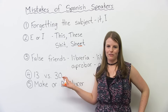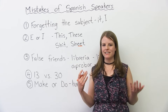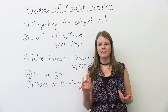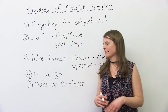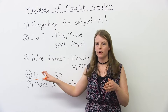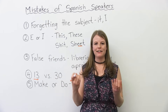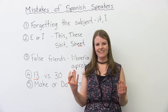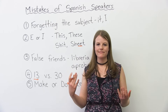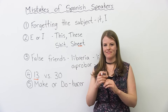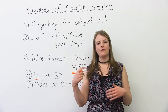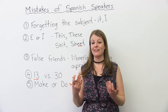Number four is a pronunciation problem with numbers. You might hear 13 and 30, 14 and 40, 15 and 50 — they sound very similar, and people might write down the wrong number. To say 13 correctly, the first part 'thir' is quiet, and 'teen' should be loud and long: 'thir-TEEN'. Whereas for 30, 'thir' is loud and long, and the last part — the T or D — is quiet: 'THIRty'. You can use the same trick for 14 and 40, 15 and 50, 16 and 60.